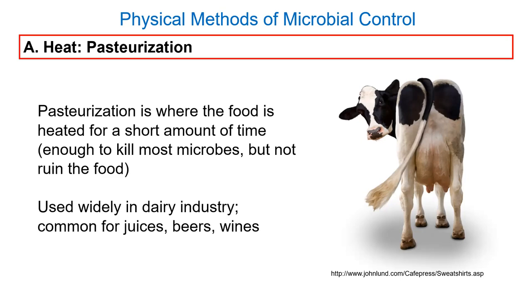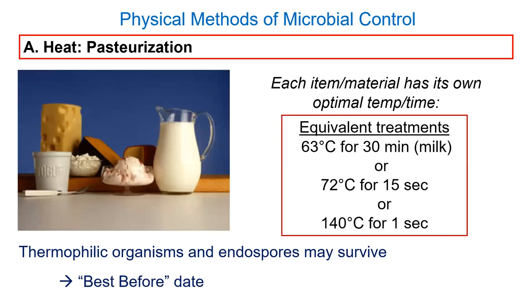The idea behind pasteurization — usually applied to liquids — is to treat things a short time with heat to hopefully kill all or most organisms, but not really affect the taste. Usually the liquid goes through a tube at a certain speed, with a certain length at a certain temperature. The hotter the temperature, the shorter the time needed, and apparently the less effect on the taste.